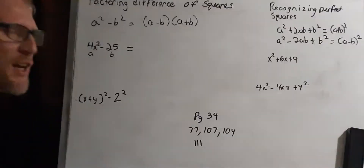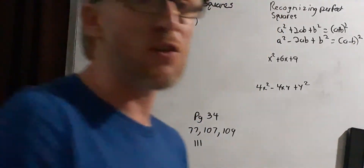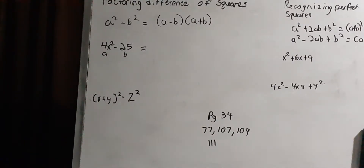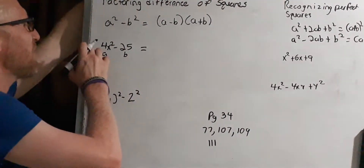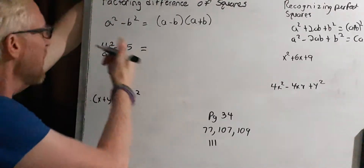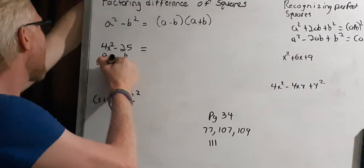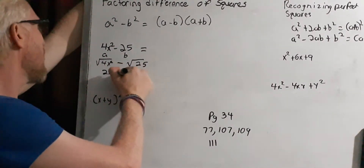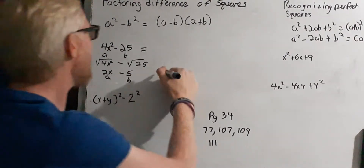Looking at the first example, you want to identify a and b. To turn them into a minus b times a plus b, we have to verify that both terms have perfect square roots. So we take the square root of 4x squared minus the square root of 25. The square root of 4x squared is 2x and the square root of 25 is 5. So 2x is our a and 5 is our b.